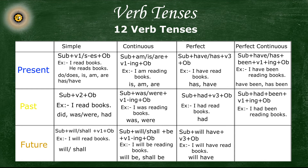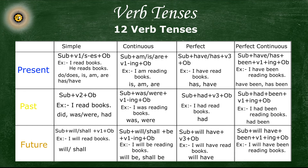Now, future perfect progressive or future perfect continuous tense — the sentence structure for this tense is: subject plus will have been plus first form of the verb with '-ing' (present participle) plus object. The example sentence for this tense is: 'I will have been reading books'. So these were all 12 verb tenses and their structures with example sentences.